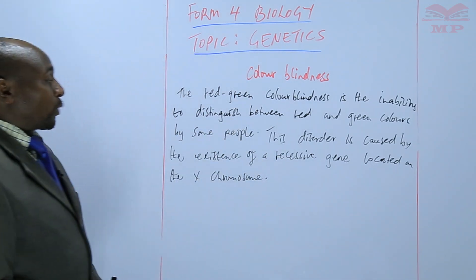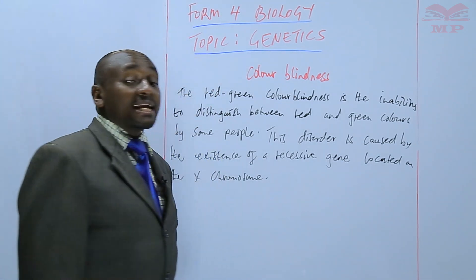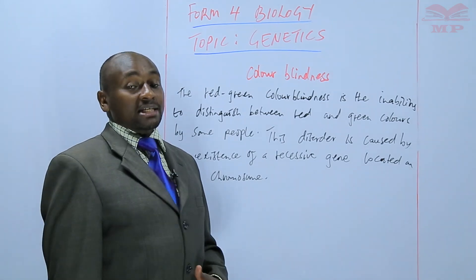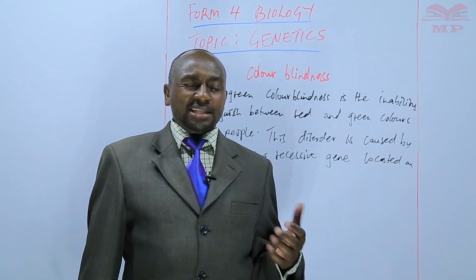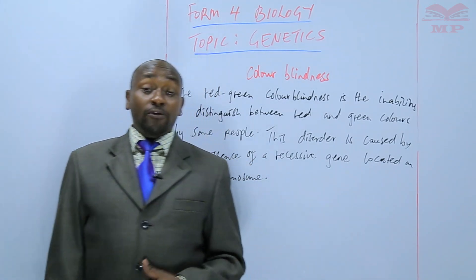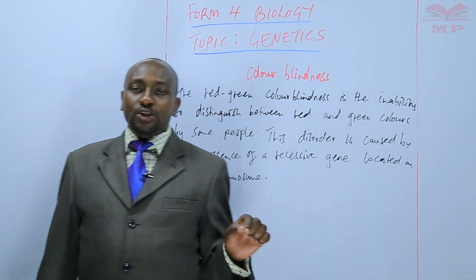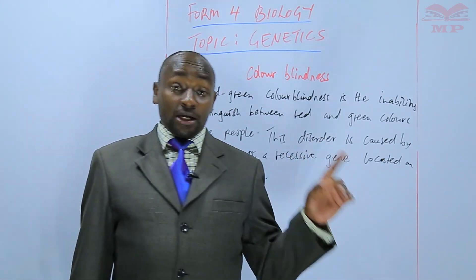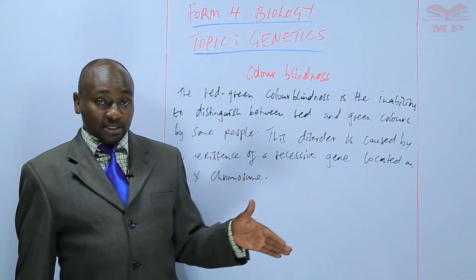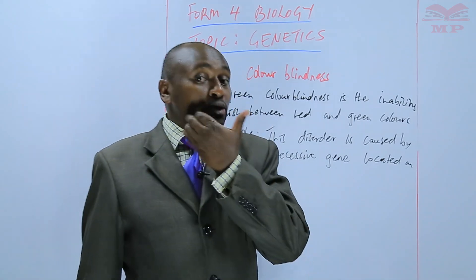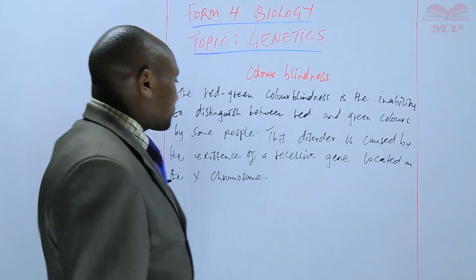When it comes to showing the genetic cross diagrams of sex-linked characteristics or sex-linked traits such as color blindness, we do the genetic crosses slightly differently from what we were doing before. We have to first identify whether this particular gene is located on the Y chromosome or on the X chromosome, and we write the chromosome together with the gene that determines that particular trait.